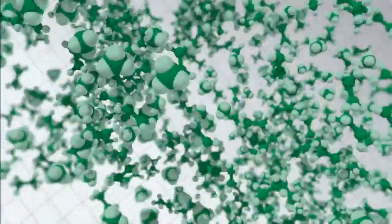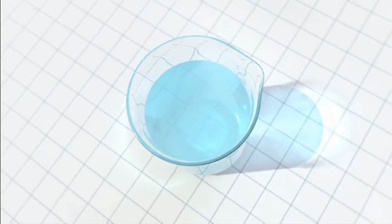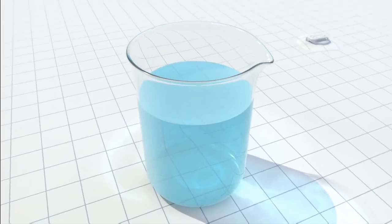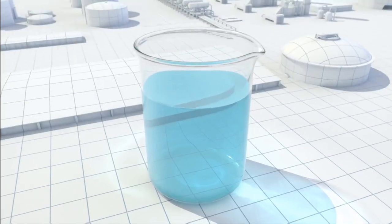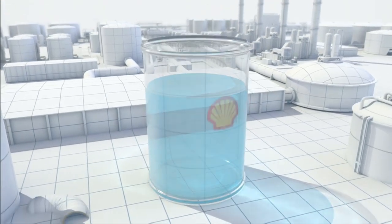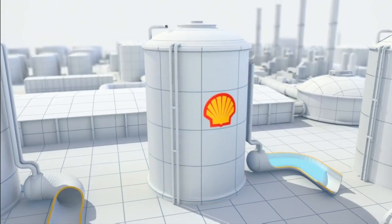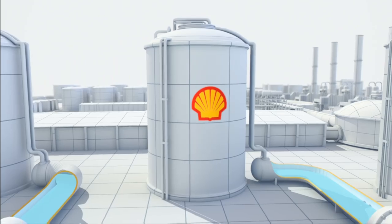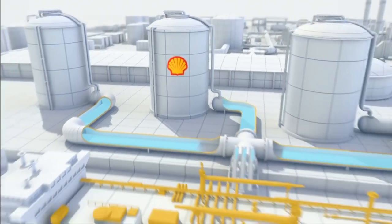This turns it into a clear, colorless, non-toxic liquid, liquefied natural gas, or LNG, that is much easier to store and transport. The LNG is kept in insulated tanks, until it is ready for loading into a specially designed LNG ship or carrier.